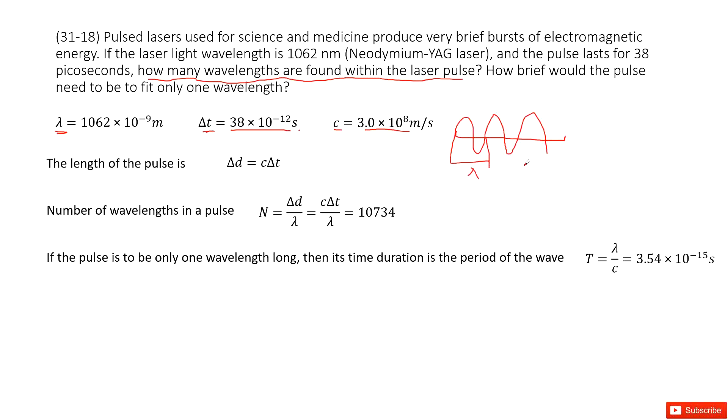It asks how many of these lambda are in a pulse. We need to find the distance of a pulse, right? This is the length of the pulse, delta d. Delta d is this one.